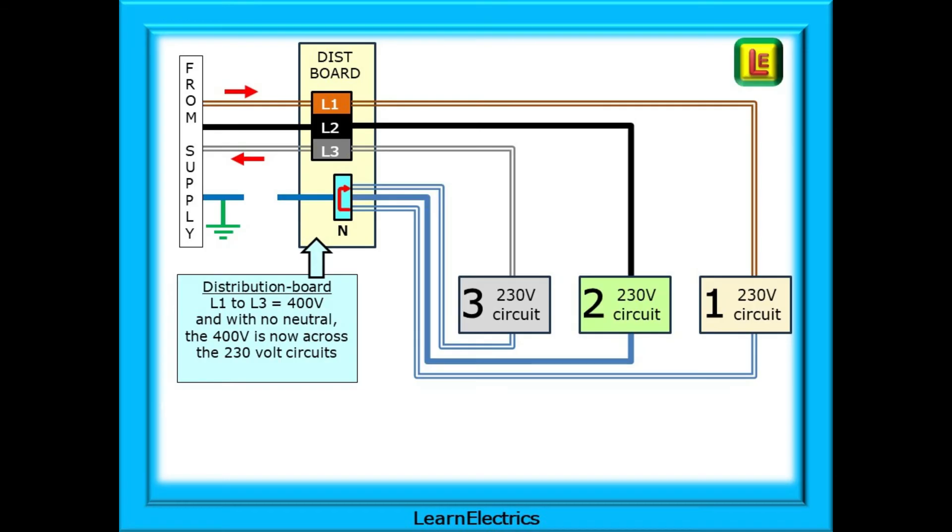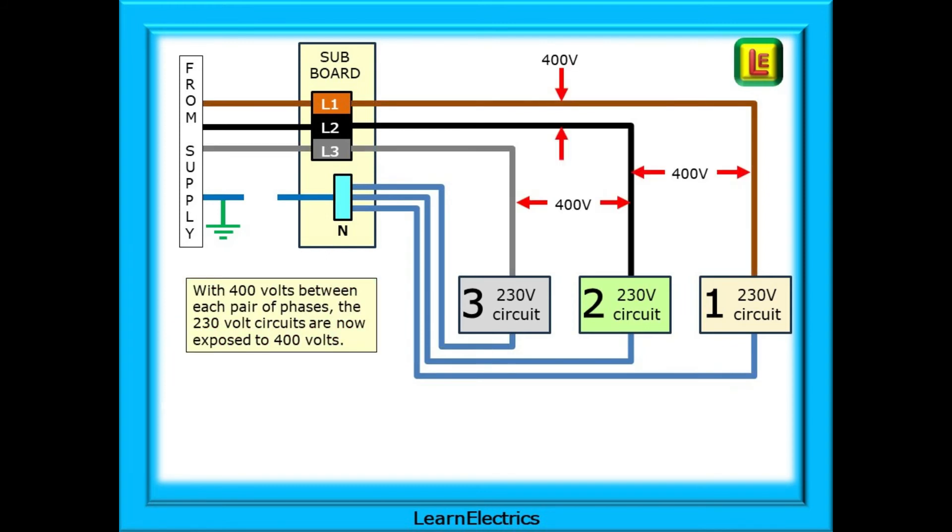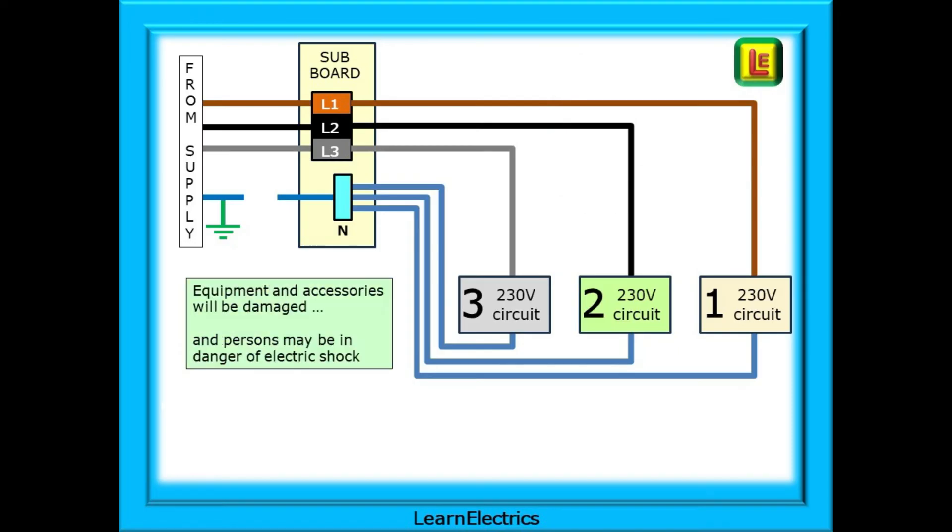At the distribution board, L1 to L3 is 400 volts and with no neutral, the 400 volts is now across the 230 volt circuits. In practice, the current will also flow through the circuits at number two and through L2 circuit breaker. And with 400 volts between each pair of phases, the 230 volt circuits are now exposed to the full 400 volts. Equipment and accessories will be damaged and persons may be in danger of electric shock. Not a lot of 230 volt equipment can withstand over voltages of 300 volts plus, even 400 volts plus. And current will try to find a path through any conductive surface, pipework, metallic structural parts, as insulation begins to overheat and break down. In many cases, equipment will be permanently damaged.